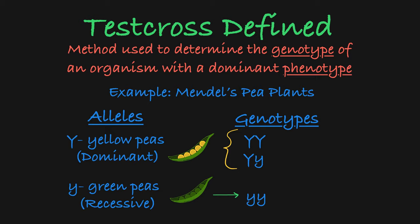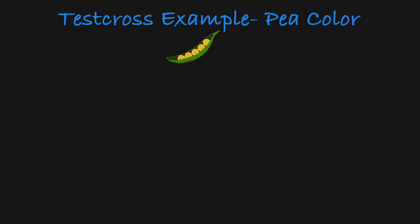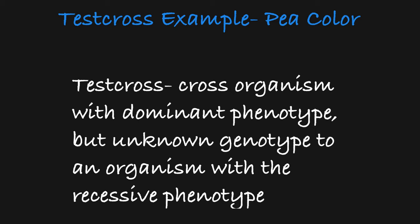So let's say you come across a plant that is producing yellow peas. How do you know what its genotype is? This is where a test cross comes in. In a test cross, you cross an organism with a dominant phenotype to an organism with a recessive phenotype.